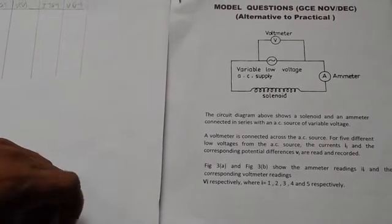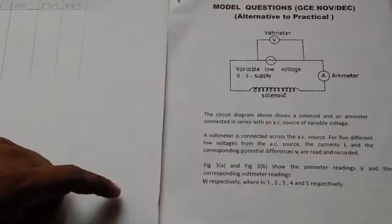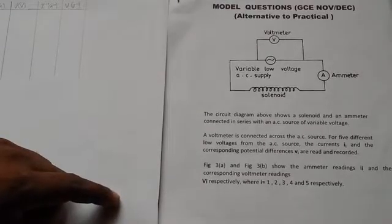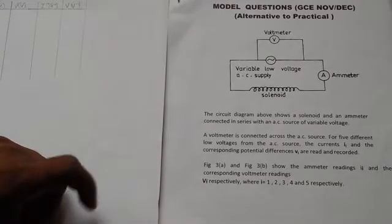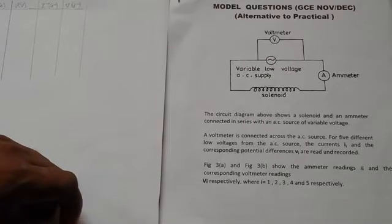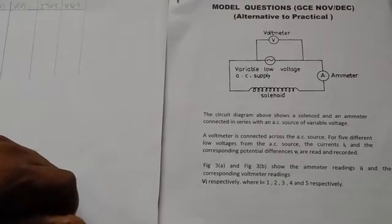Welcome to another edition of Alternative to Physics Practical. As you can see, there is a model question on electricity, a solenoid connected in series, and a voltmeter connected across an AC source.